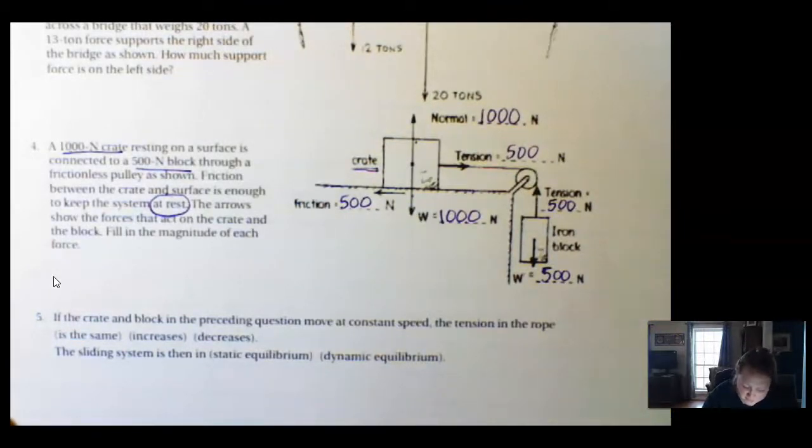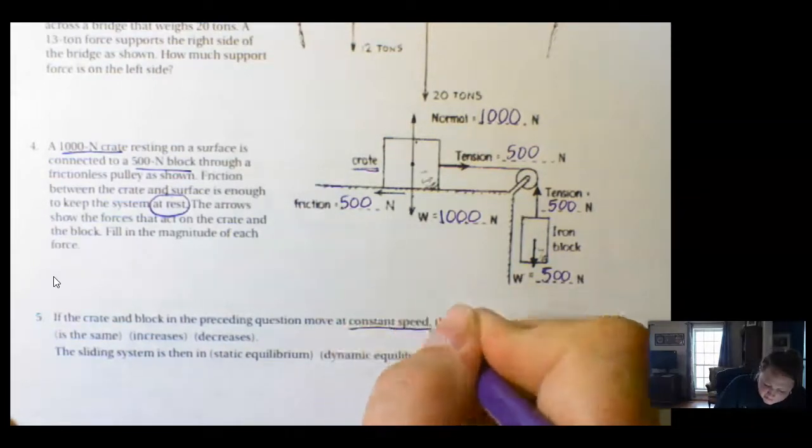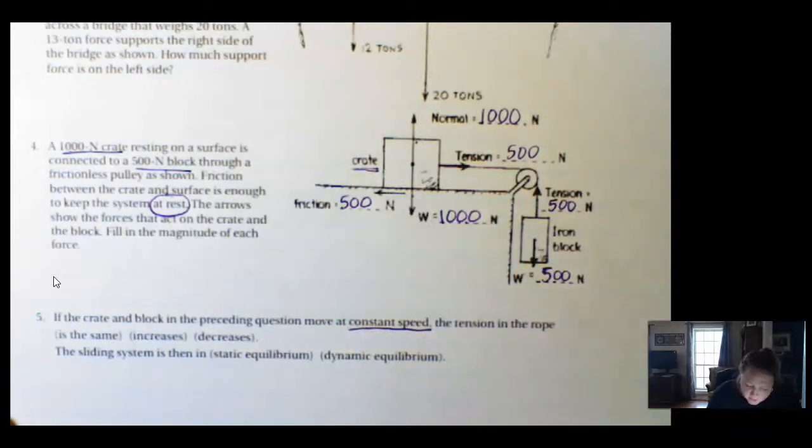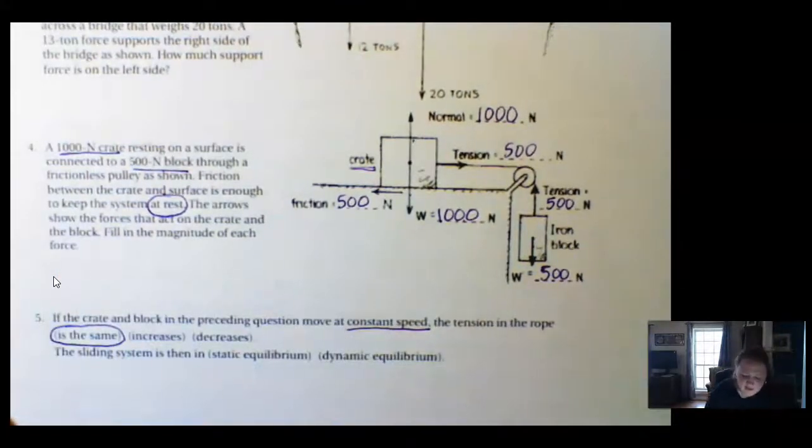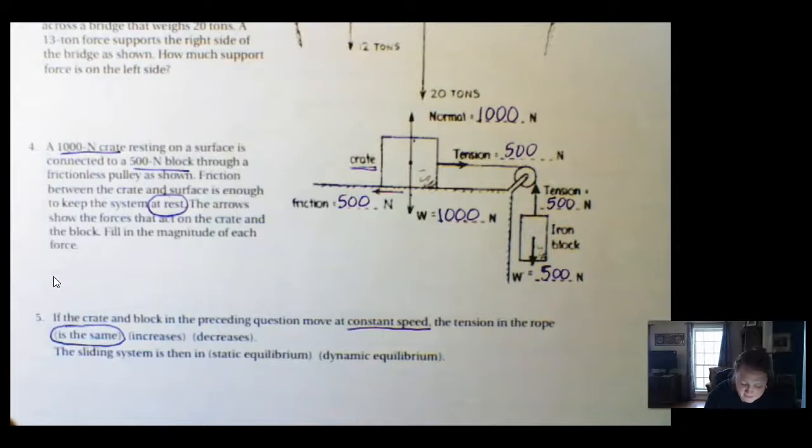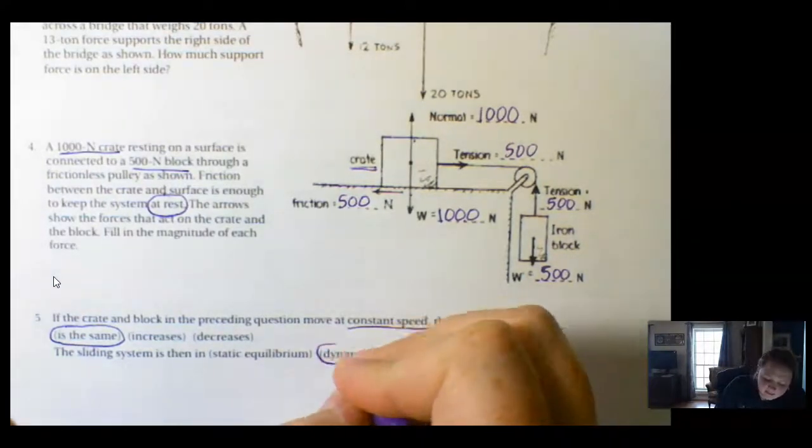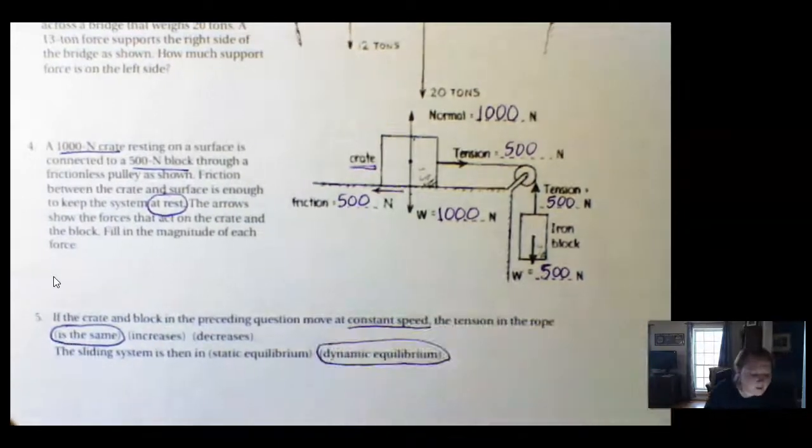Number five. It says, if the crate and block in the preceding question move at a constant speed, the tension in the rope, what do you think happens? It should be, is the same. The sliding system is then in dynamic equilibrium.